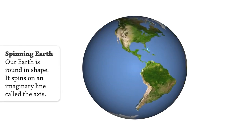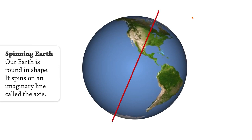Our Earth is round in shape. It spins on an imaginary line called the axis.